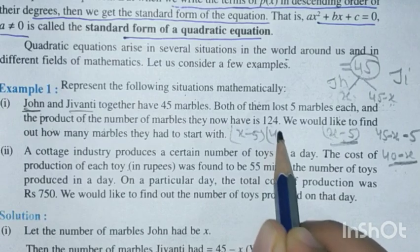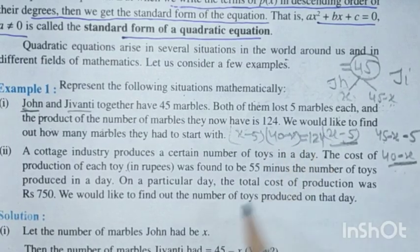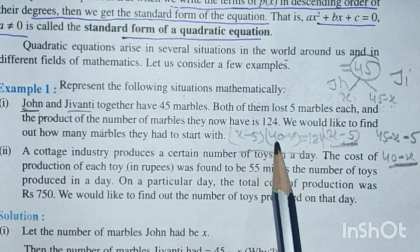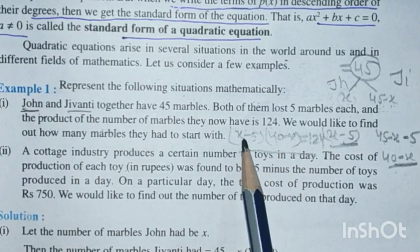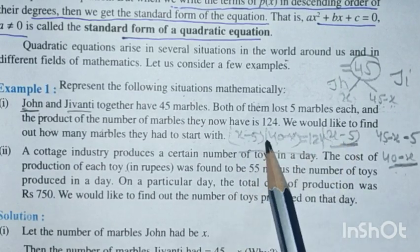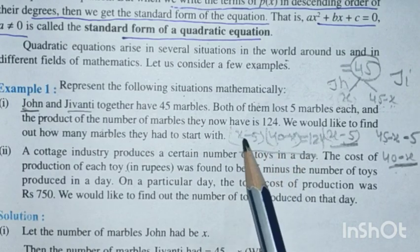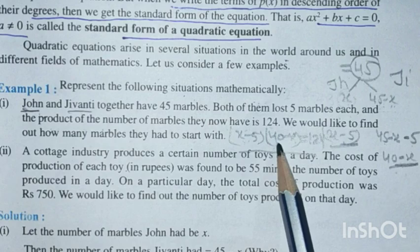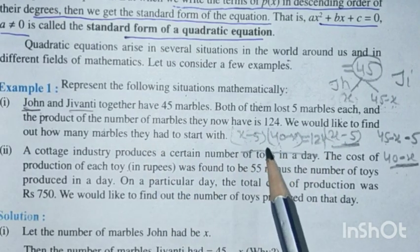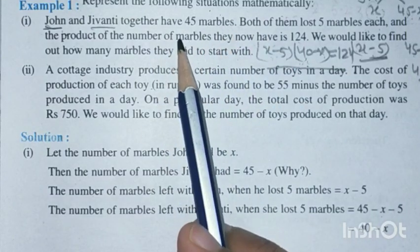When we multiply these two quantities we get a quadratic equation. For Exercise 4.1 we only needed to represent the situation, but for Exercise 4.2 we also need to find the value of x — that is, tell how many marbles John and Jayvanti each had.